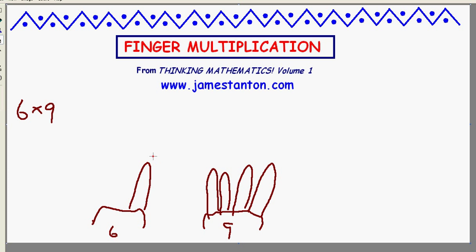To compute the product, each finger up is worth 10. That's currently 5 fingers up. That's 50 again. And add to that, multiplying the fingers down. There are 4 fingers down on this side. 1 finger down on this side. 4 times 1 is 4. I bet 6 times 9 is 54.